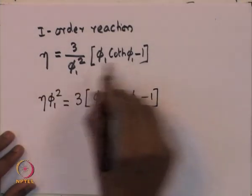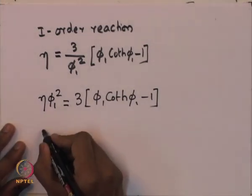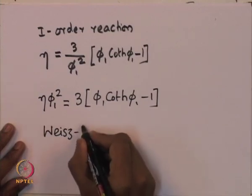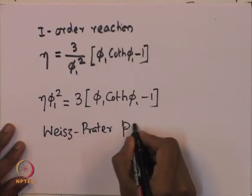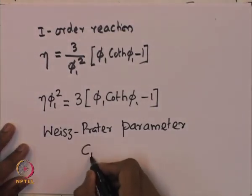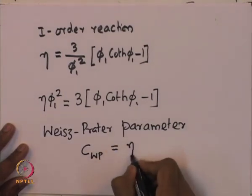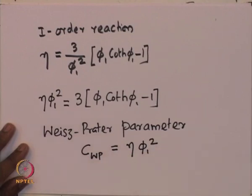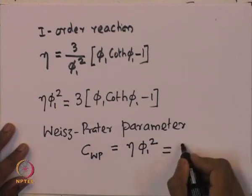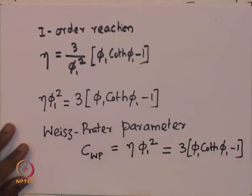This equation can be modified by multiplying both sides by phi_1 squared, giving: eta times phi_1 squared equals 3 times (phi_1 coth(phi_1) minus 1). We now define a new parameter called the Weiss-Prater parameter: C_WP equals eta times phi_1 squared, which equals 3 times (phi_1 coth(phi_1) minus 1).